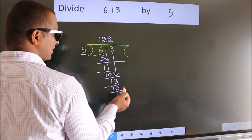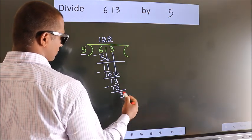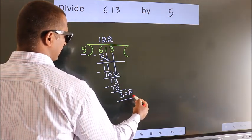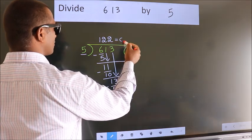No more numbers to bring down, so we stop here. This is our remainder. This is our quotient.